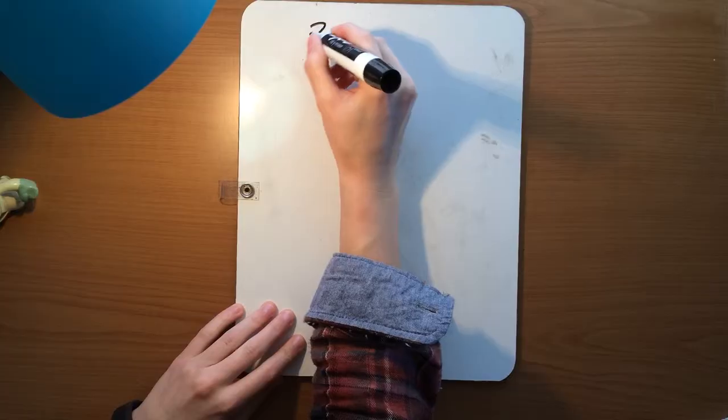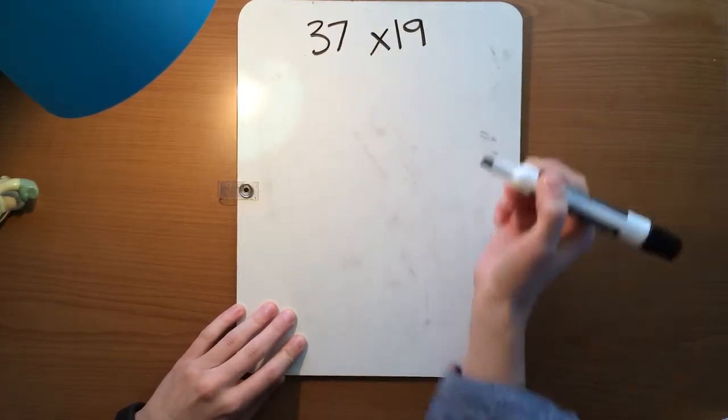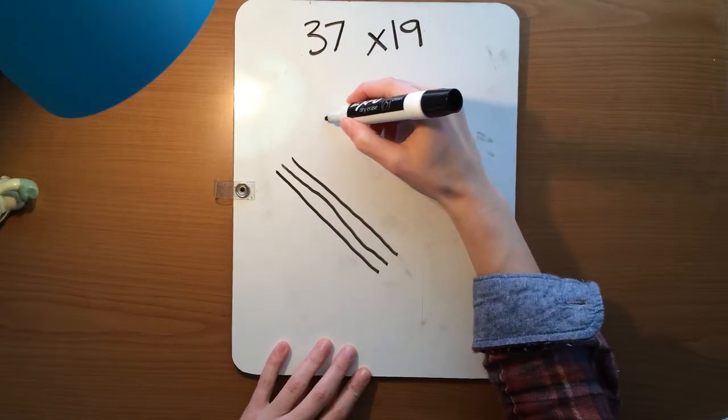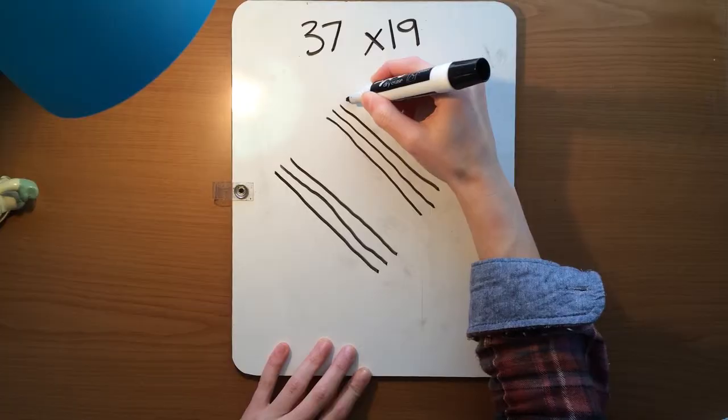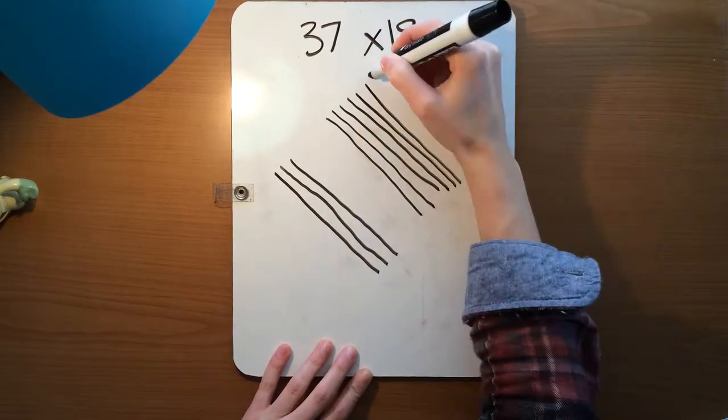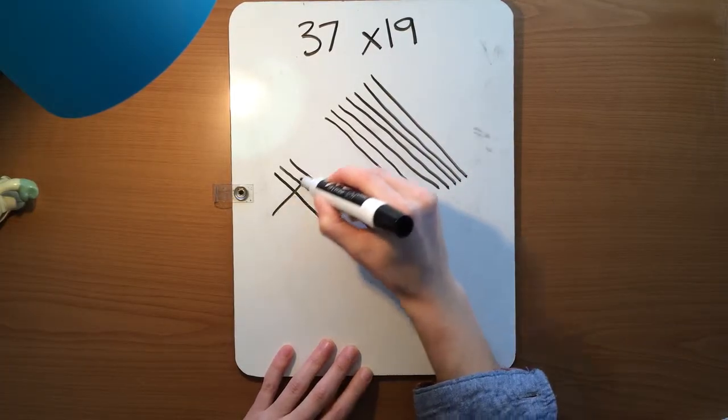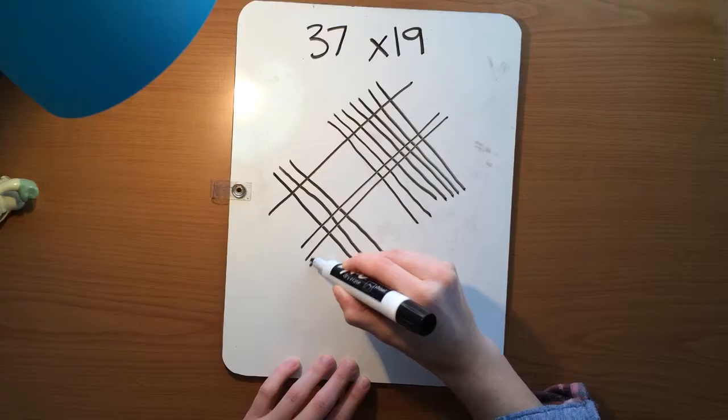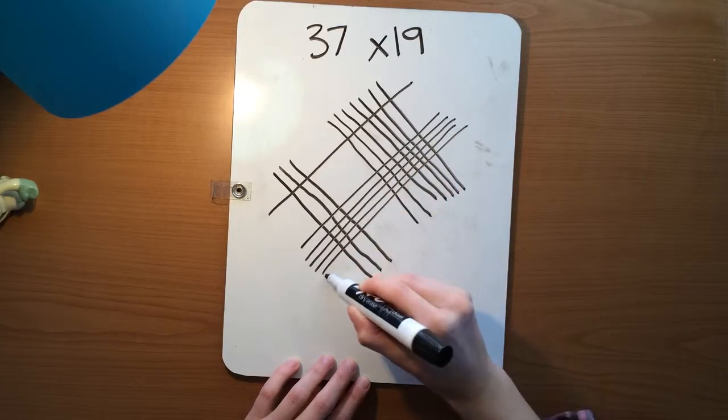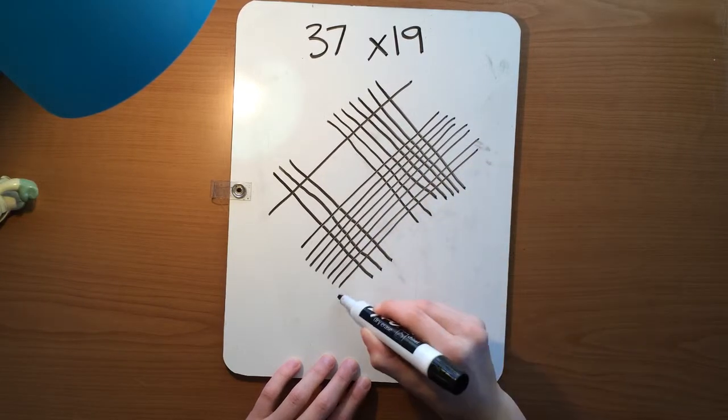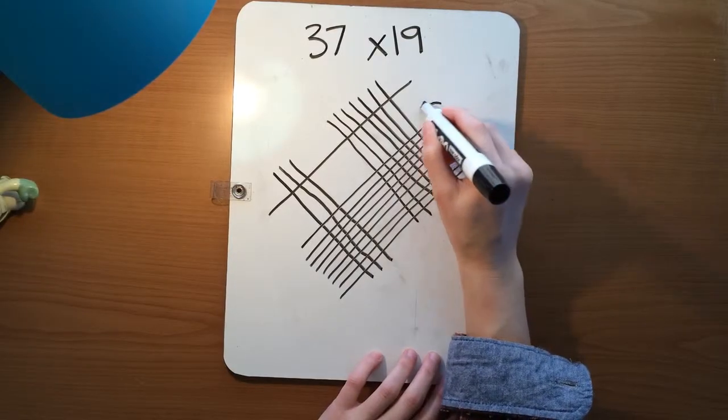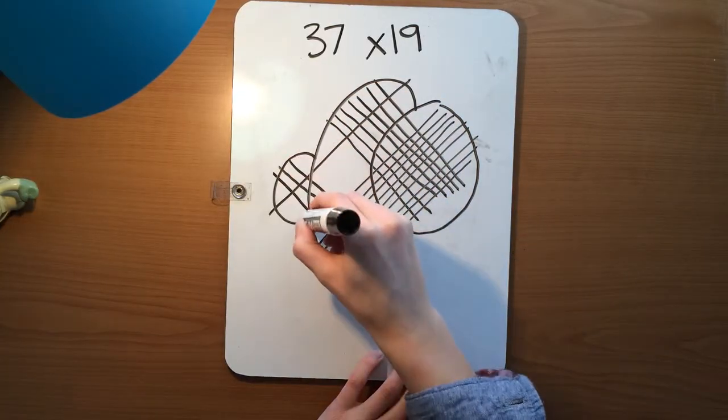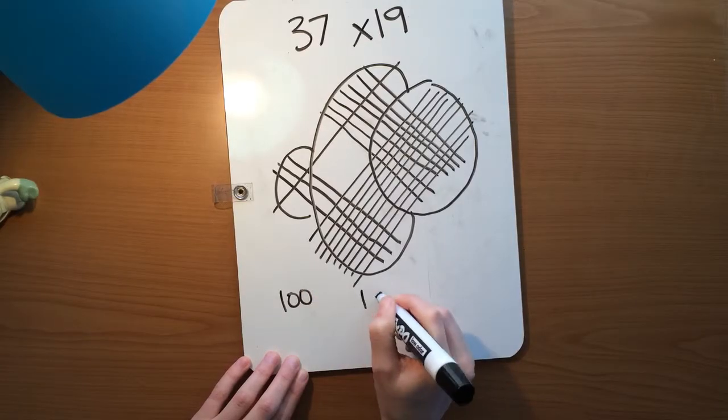We'll do 37 times 19. So we'll make 3 lines together for the 3 in the tens place, and come over and make 7. 1, 2, 3, 4, 5, 6, 7. For our 19, we only have 1 line for the tens place and 9 lines for the ones place. 1, 2, 3, 4, 5, 6, 7, 8, 9. Looks like that will leave us with a lot of counting to do. However, 1's place, tens place, and hundreds place. I'm going to go ahead and write that down here.